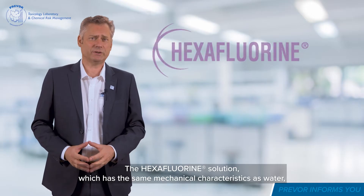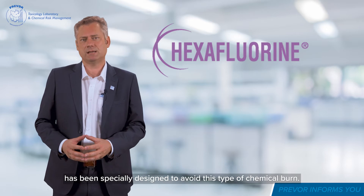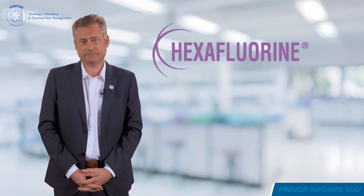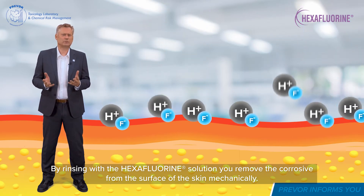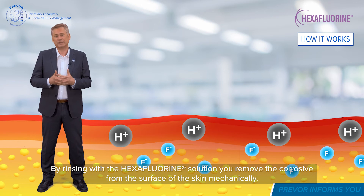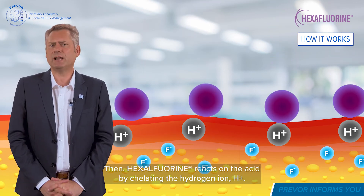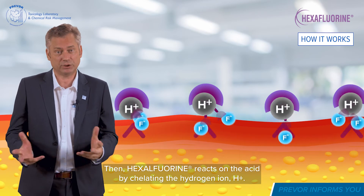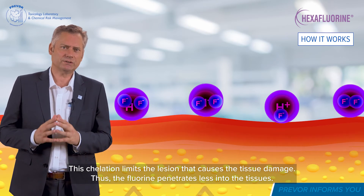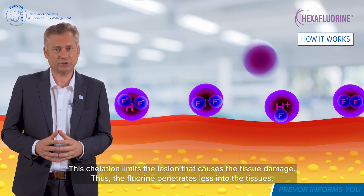The hexafluorine solution, which has the same mechanical characteristics as water, has been specially designed to avoid this type of chemical burn. By rinsing with the hexafluorine solution, you remove the corrosive from the surface of the skin mechanically. Then hexafluorine reacts on the acid by chelating the hydrogen ion H+. This chelation limits the lesion that causes the tissue damage. Thus the fluorine penetrates less into the tissues.